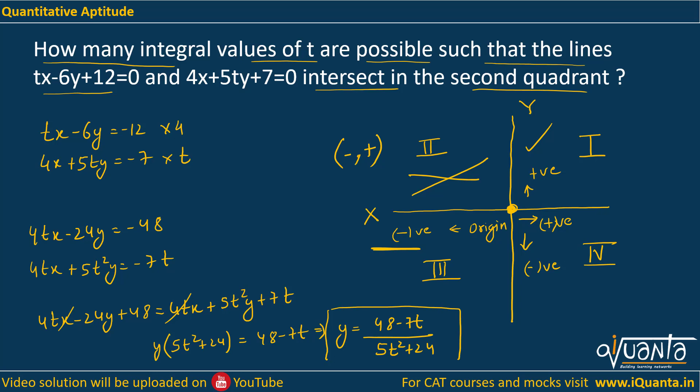What will be the value of x? You can put this value of y in any of the equations, first or second. You will be getting x = -(60t+42)/(24+5t²). So now we have the values of x and y coordinates.